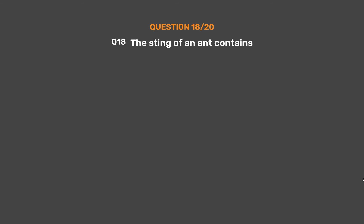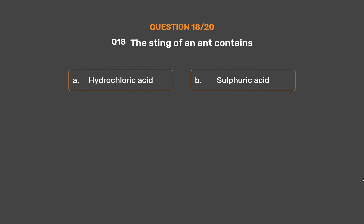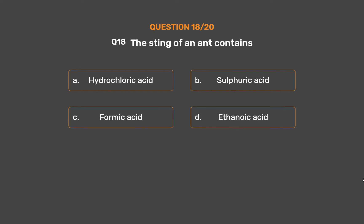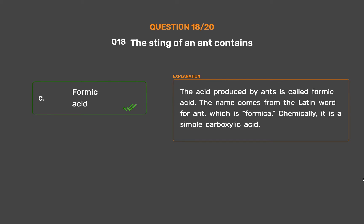Question number 18. The sting of an ant contains — Option A: Hydrochloric acid. Option B: Sulfuric acid. Option C: Formic acid. Option D: Ethanoic acid. The correct answer is Option C: Formic acid. The acid produced by ants is called formic acid. The name comes from the Latin word for ant, which is formica. Chemically, it is a simple carboxylic acid.